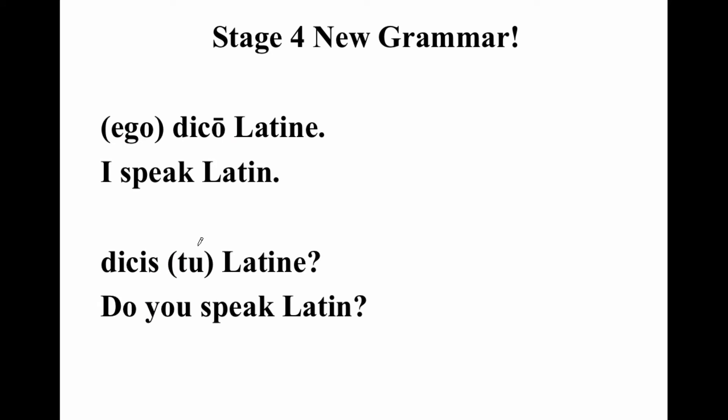The pronouns are optional. Throughout most of book one of the Cambridge series, the pronouns ego and tū are going to be there every time. Think of them as training wheels on your Latin bicycle — they remind you ego means I, tū means you. But don't get too used to them, because the day will come when ego and tū vanish. You need to remember: the -O of 'dico' means I, the -S of 'dicis' means you.